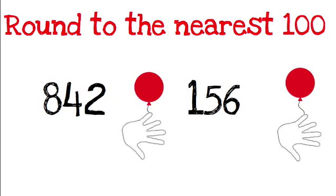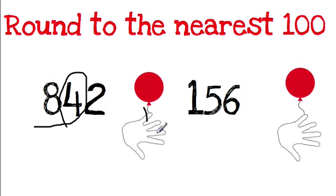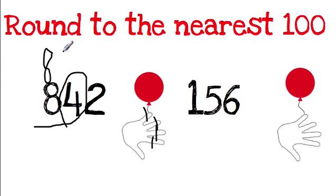Let's try rounding to the nearest 100 again. Underline the 100s place, circle the one next door. I have 4, so I count holding my balloon: 1, 2, 3, 4. My balloon does not go up — my thumb is still holding onto it. Four or less, let it rest, meaning this 8 just stays the same. This becomes a 0 and this becomes a 0. So 842 rounded to the nearest 100 is 800.